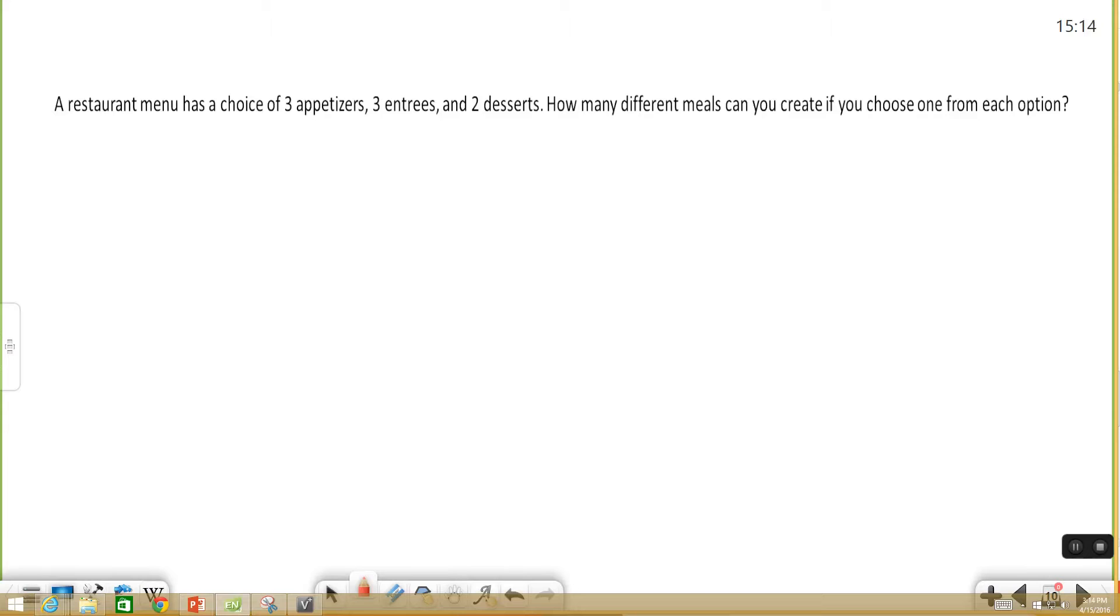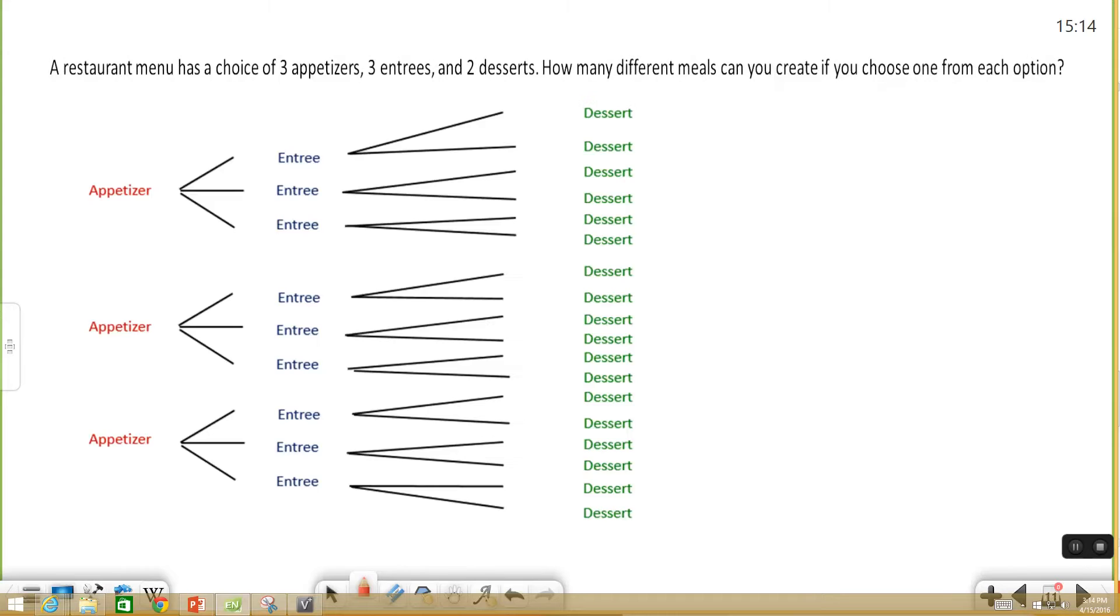So I would say the more tedious way you can do this is you can create a diagram to represent your possible options. That would look something like this. You have your three appetizers. For each appetizer you have three entrees. For each entree you have two desserts.